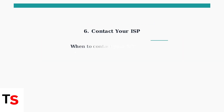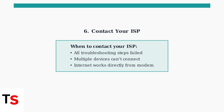Finally, if none of these advanced troubleshooting steps resolve your connection issues, contact your internet service provider. The problem may be with your internet connection itself, not your Orbi system. These advanced troubleshooting techniques should resolve most persistent Orbi connection issues. Remember to try them in order, starting with firmware updates and working through to more drastic measures like factory resets.